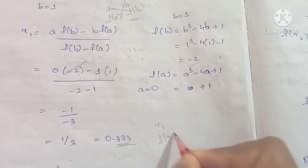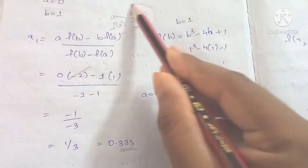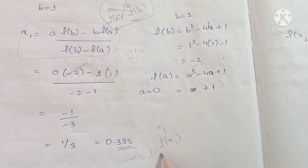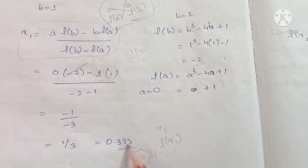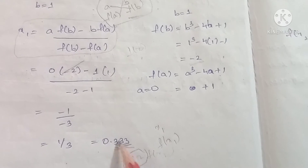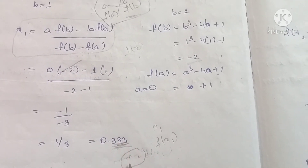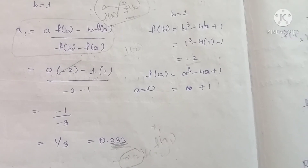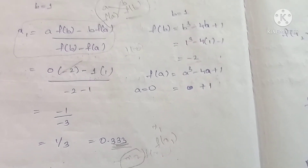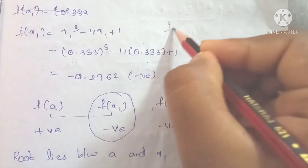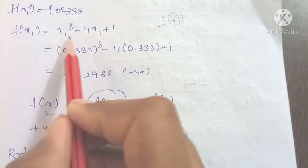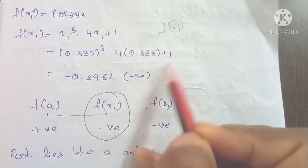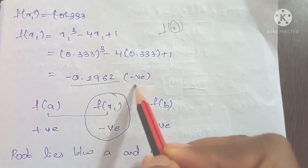Next we find f(x1). Substituting x1 = 0.333 into the equation: f(x1) = (0.333)³ - 4×0.333 + 1 = 0.037 - 1.332 + 1 ≈ -0.2962. This is a negative value. Since f(a) is positive and f(x1) is negative, the root lies between a and x1.